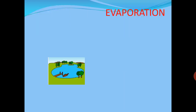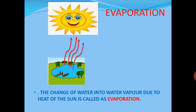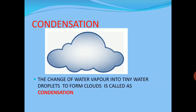What is evaporation? Water collects in water bodies and then due to the heat of the sun, water changes into vapor and moves up in the sky. The change of water into water vapor due to the heat of the sun is called evaporation. The next step is condensation — the change of water vapor into tiny water droplets to form clouds is called condensation.